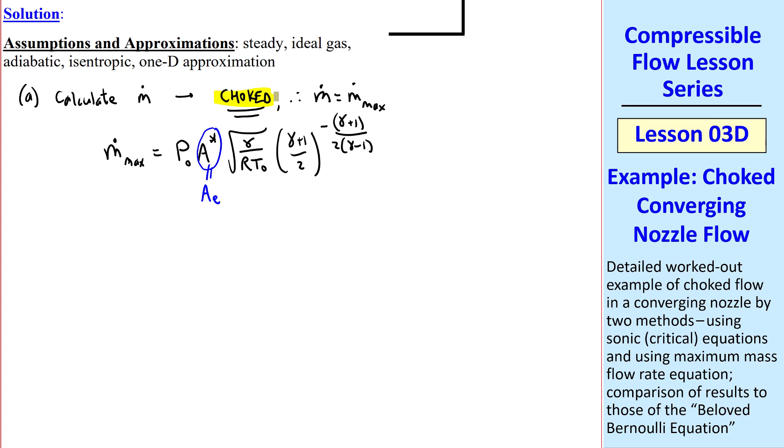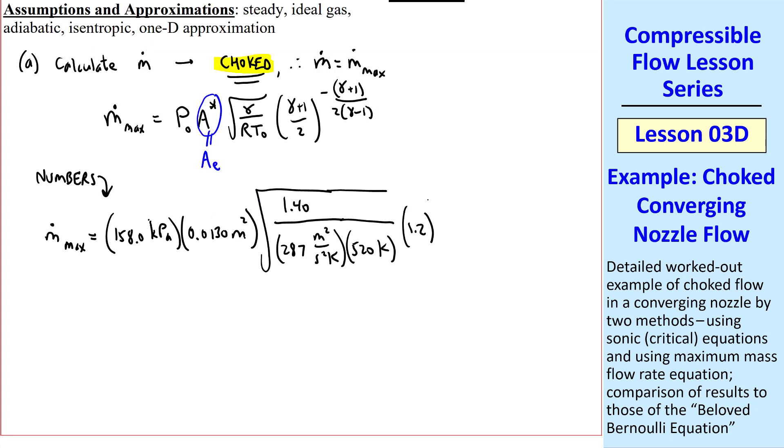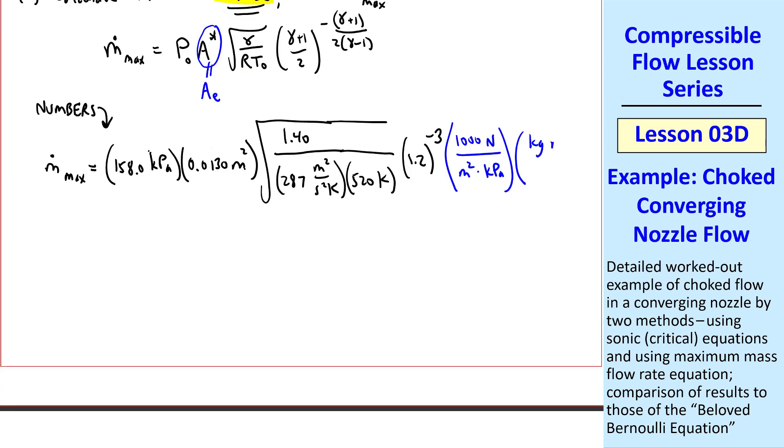Let's plug in the numbers. m dot max equal P naught, AE, gamma for air is 1.40, R for air, T naught, and gamma plus 1 over 2 would be 2.4 over 2, or 1.2, which we can do in our head. And when you plug in 1.4 here, the exponent becomes negative 3. We'll need a couple unity conversion factors. There are a thousand newtons per meter squared kpa, and a kilogram meter is a second squared newton.